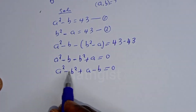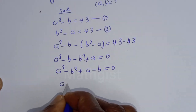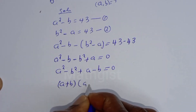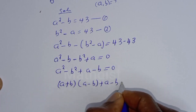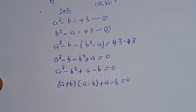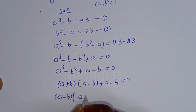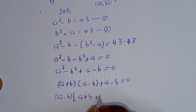We have A squared minus B squared, which is a difference of squares. So this can be written as (A plus B)(A minus B) plus (A minus B) is equal to 0. Now, A minus B is common, so we factor it out: (A minus B)(A plus B plus 1) is equal to 0.